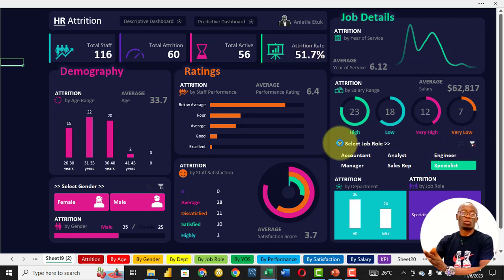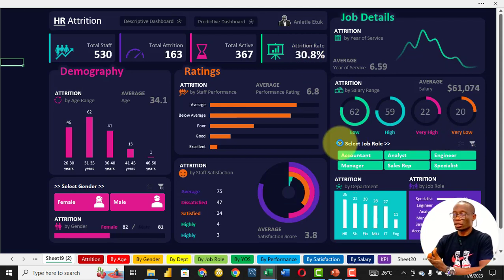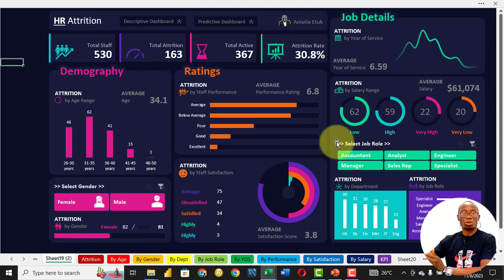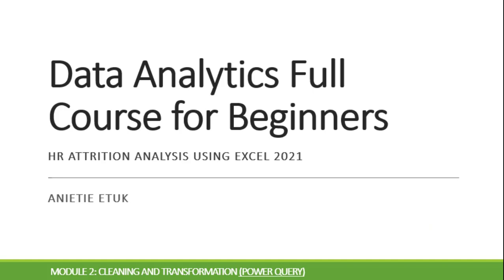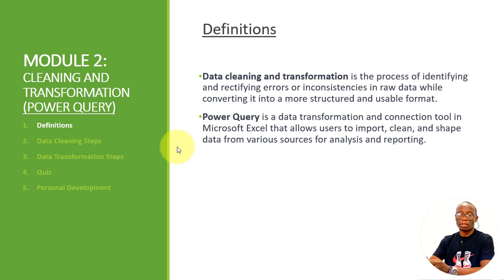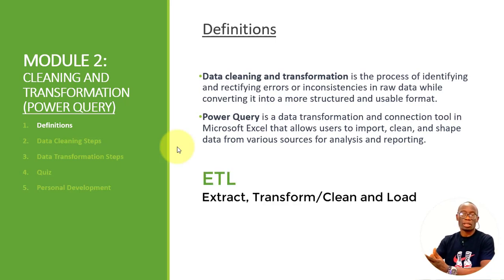We also look at based on job role — we have a count of 41, those that left are 5, making it an attrition rate of 12.2, which is low compared to the general attrition rate of 30.8. Specialists have 51.7, which is the highest. This gives us an overview of the project you will be working on in this class. Now let's get into the content for this section. In Module 2 of the course, we are looking at cleaning and transformation. In some materials, this is also called extract, transform, and load — that is ETL.